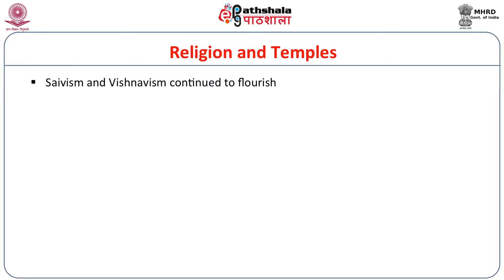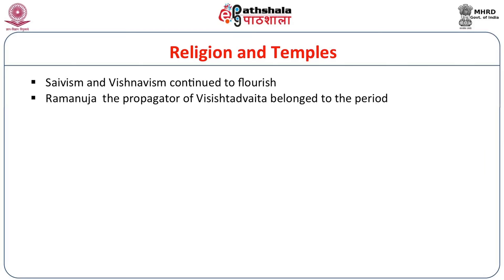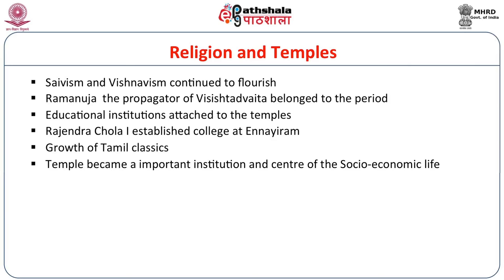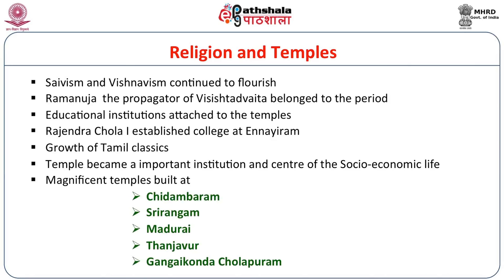The Cholas maintained religious tolerance and were builders of several temples in South India. Shaivism and Vaishnavism continued to flourish. Ramanuja, the propagator of Vishishtadvaita, belonged to this period. Several educational institutions were attached to temples. Rajendra Chola I established a college at Ennairam. There was a growth in Tamil classics, and several scholars flourished in the courts of Chola kings, producing masterpieces in Tamil literature. The temple became an important institution and the centre of socio-economic life. Magnificent temples were built at Chidambaram, Srirangam, Madurai, Tanjabur, and Gangaikonda Cholapuram.